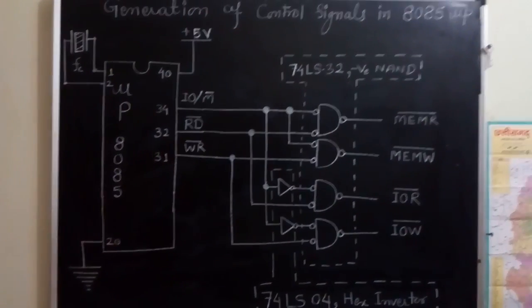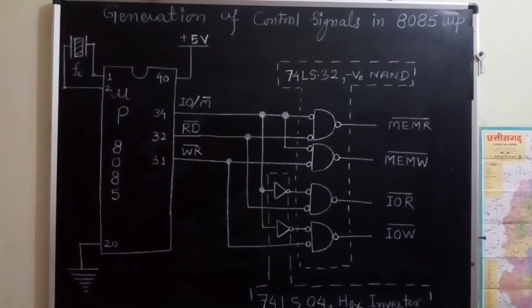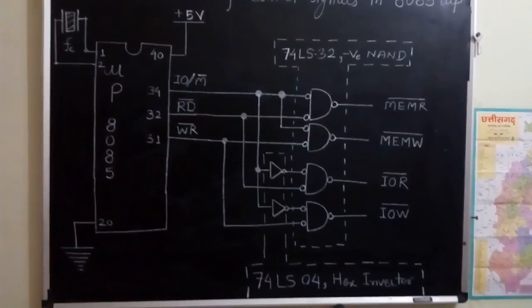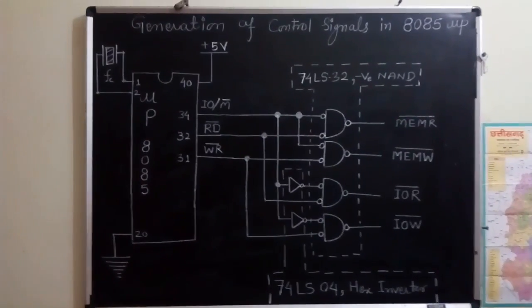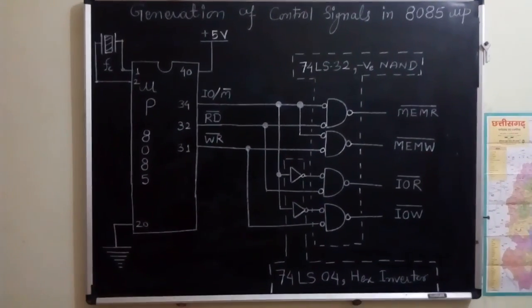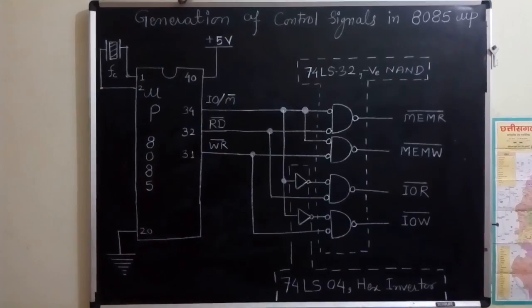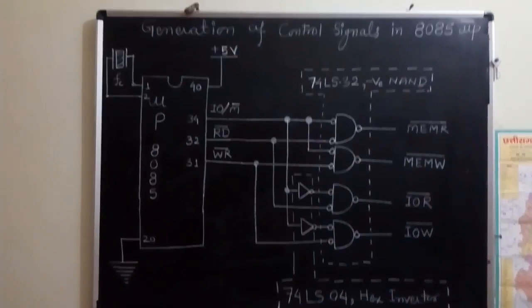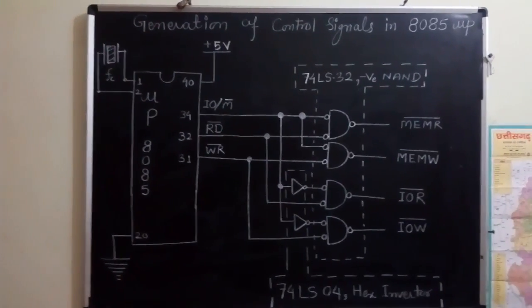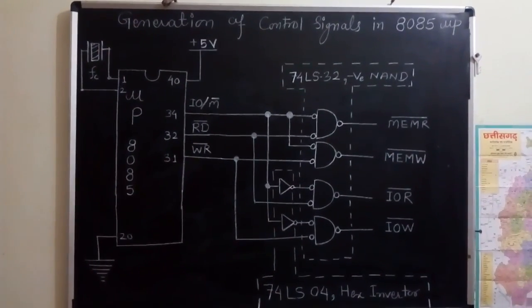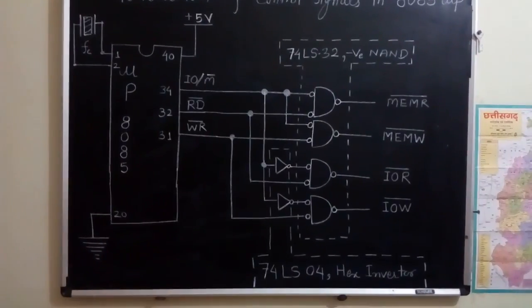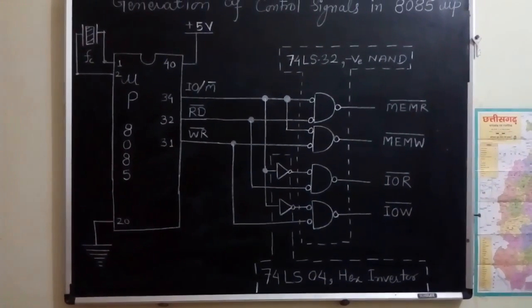memory read, memory write, IOR read and IOR write. And this four signal generation from three internal signals generated by 8085 microprocessor is carried out by using 74LS32 negative NAND gates and 74LS04 hex inverters.